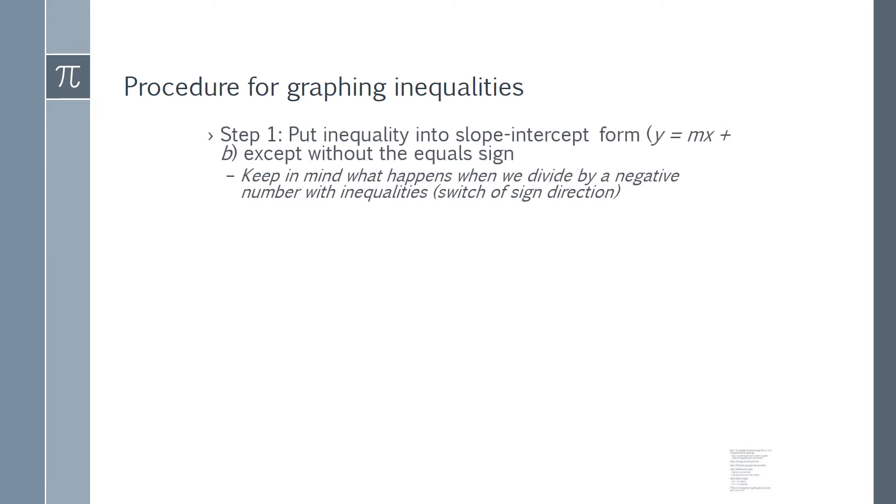Here's your procedure for graphing inequalities. The first step is to put the inequality in slope-intercept form, which is y equals mx plus b, except you're not going to have an equal sign in this situation. And please keep in mind your rules for the multiplication and division properties of inequality, meaning that you must switch the direction of the sign when you divide or multiply by a negative number. Typically in this situation we're only going to be dividing by negative numbers.